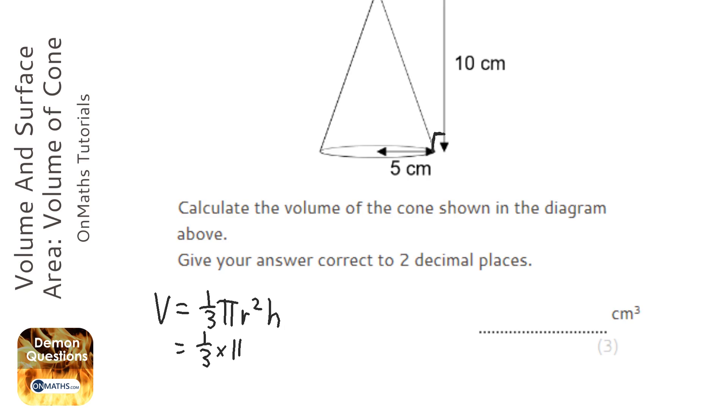We're going to do one-third times pi times the radius, which is five squared, times the height. I'm going to get my calculator and the way I do this is pi times five squared times 10, press equals, and then divide it by three. That's the same as multiplying it by one-third; you get the same answer either way.